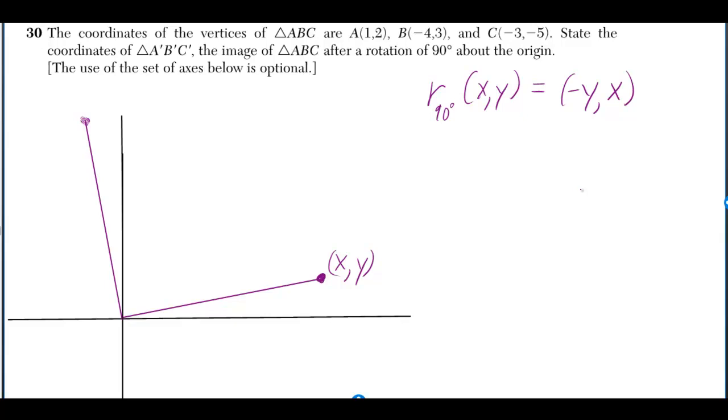The coordinates of the vertices of triangle ABC are (1, 2), (-4, 3), and (-3, -5). State the coordinates of triangle A prime, B prime, C prime, the image of triangle ABC after a rotation of 90 degrees about the origin.